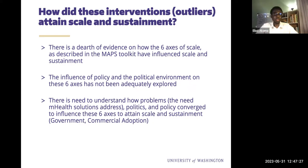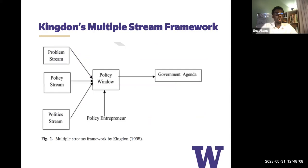This leads to the need to understand how problems, the need for mHealth solutions, politics, and policy converge to influence the six axes. For example, taking a solution like MomConnect scaled up in South Africa, or NIKSHAY implemented in India — the question is how the problem of TB aligned with the digital health platform solution to reach the point where the government was willing to budget for it, deploy personnel, and provide everything the solution needed to advance. This is where I propose taking Kingdon's Multiple Streams Framework, which brings together problems, policy, and politics to converge at a policy window.